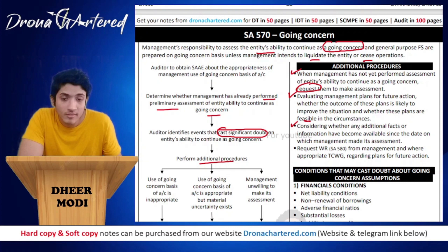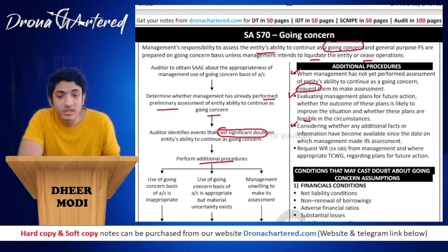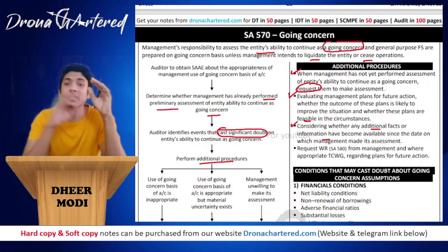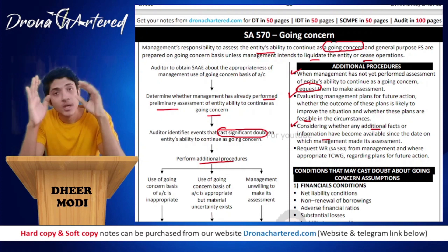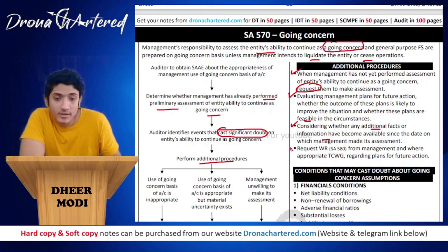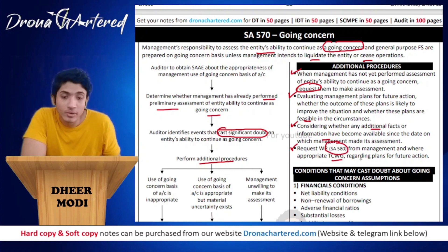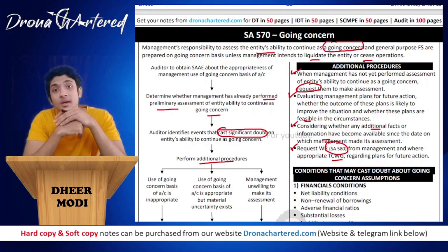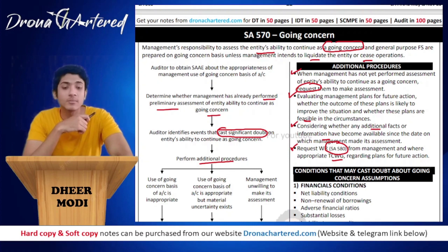Next, the auditor will consider whether any additional facts or information have become available since the date on which management made its assessment — management might have made its assessment on the financial statement date, so the auditor will check if any new information after that date is available. Last, the auditor will request written representations — that is SA 580 — from management, and where appropriate also from TCWG, regarding plans for future action.